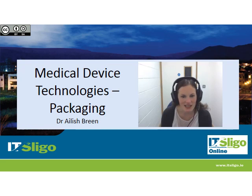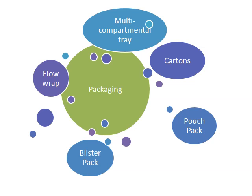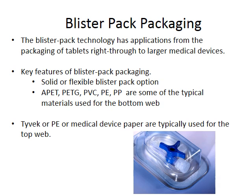Welcome back. In the next few slides I'm going to talk about the different types of packages that are typically available in the medical device manufacturing industry. Traditionally there's been pouch packs, blister packs, flow wrap packaging, and multi-compartmental trays. Cartons are used more often in secondary packaging, sometimes in primary packaging.